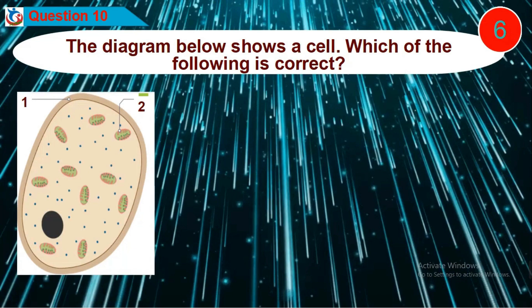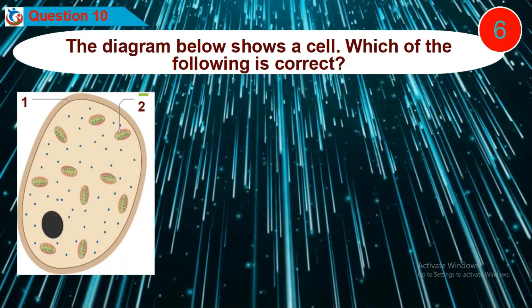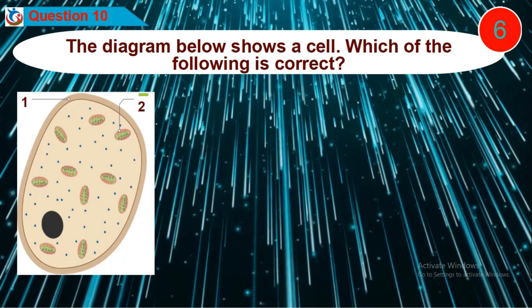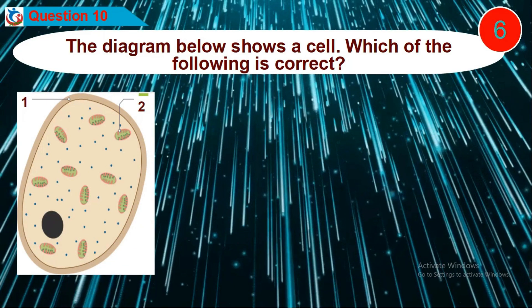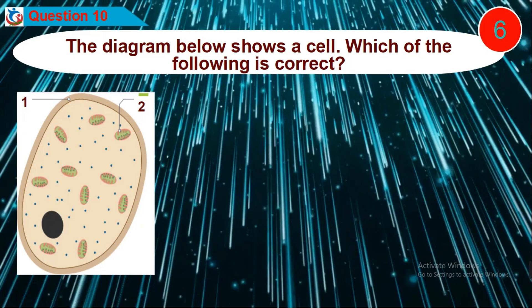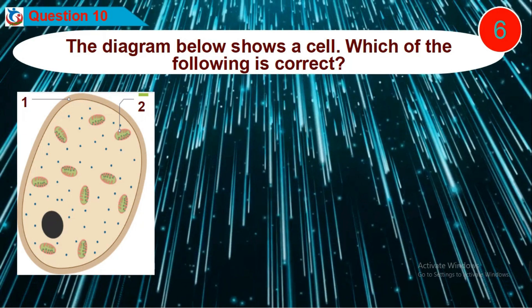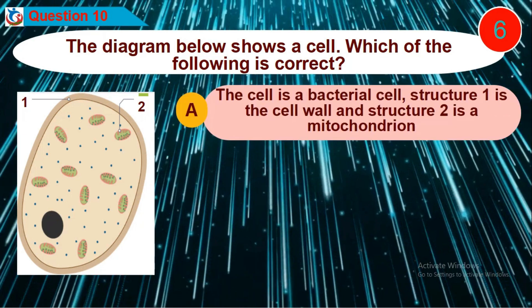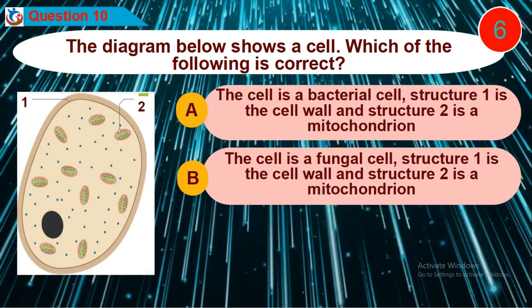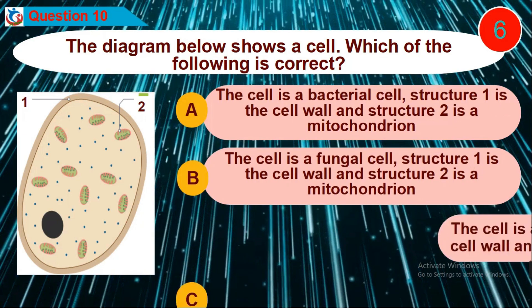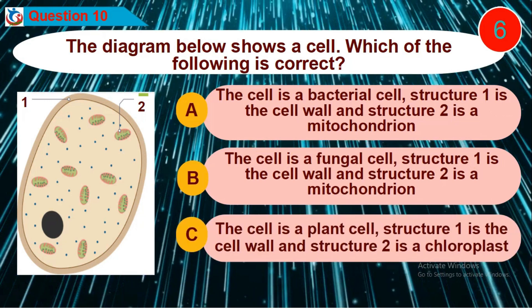Question 10: The diagram below shows a cell. Which of the following is correct? Is it option A, B, C, or D?